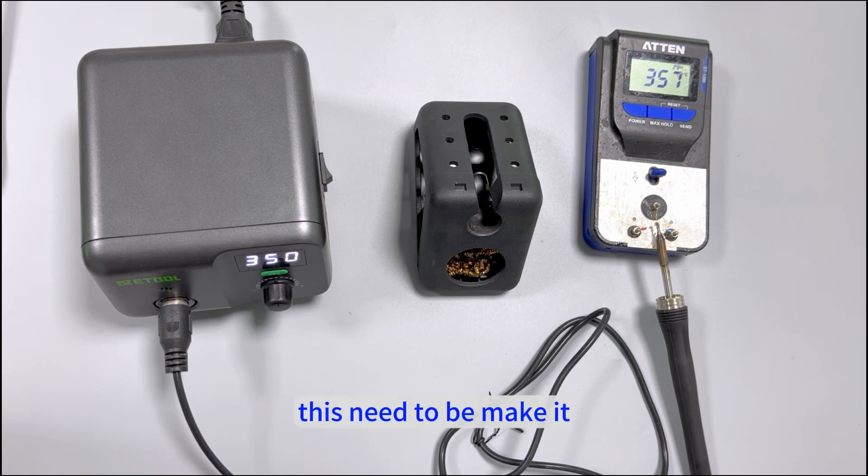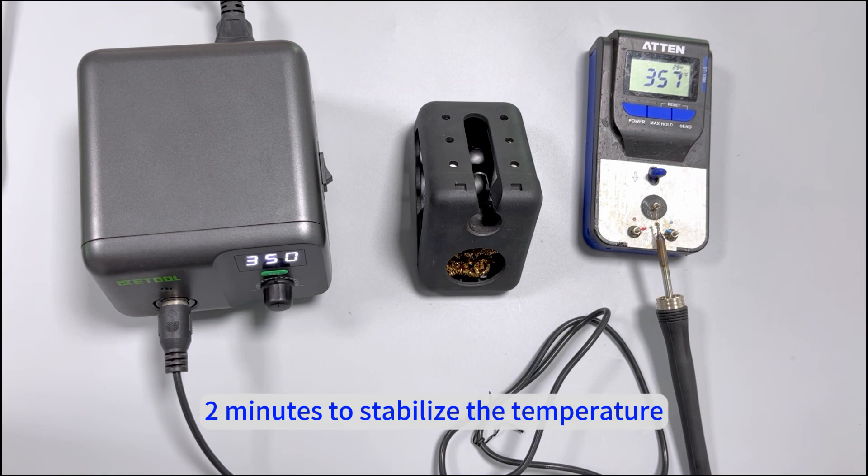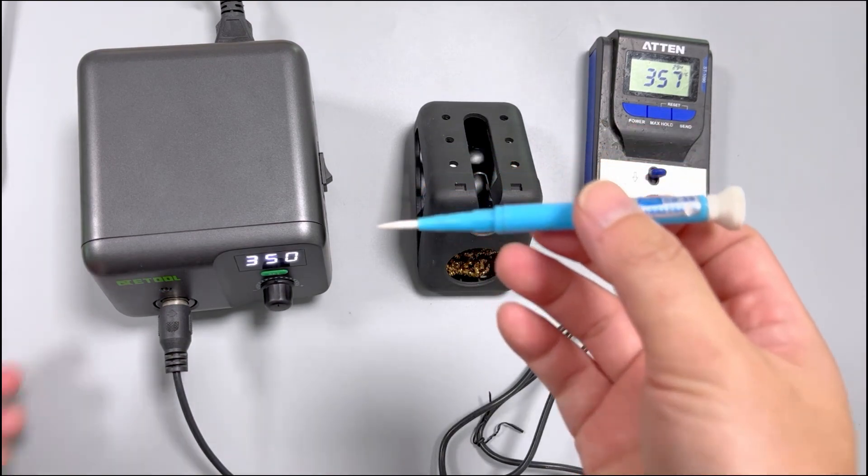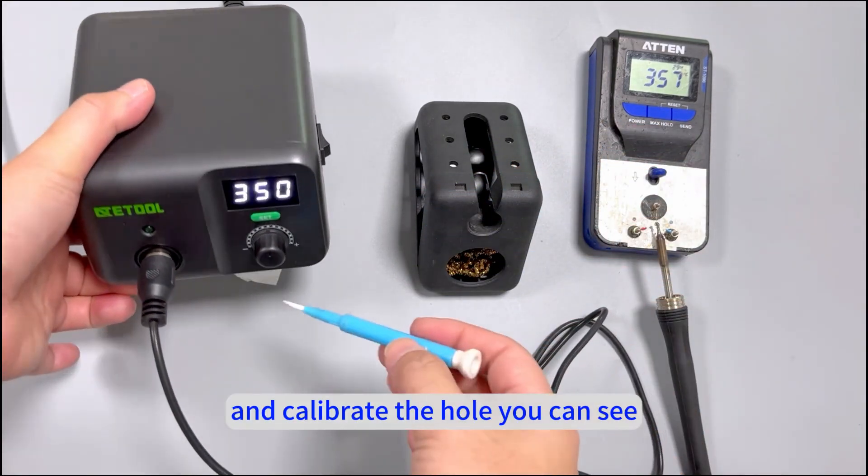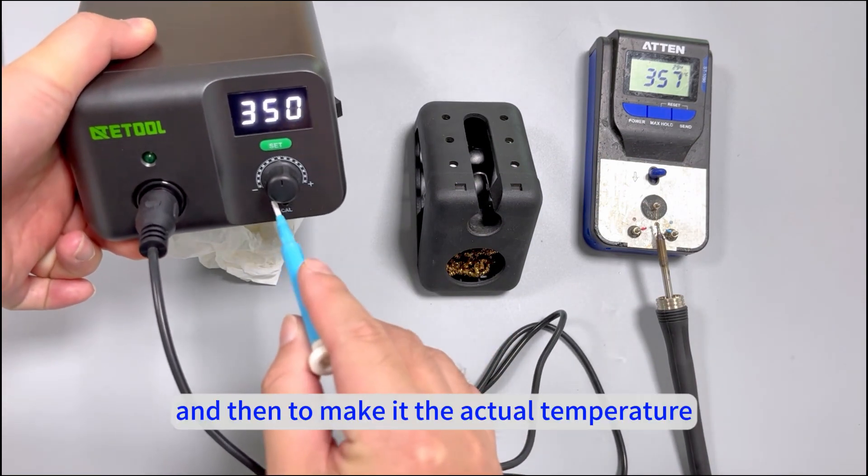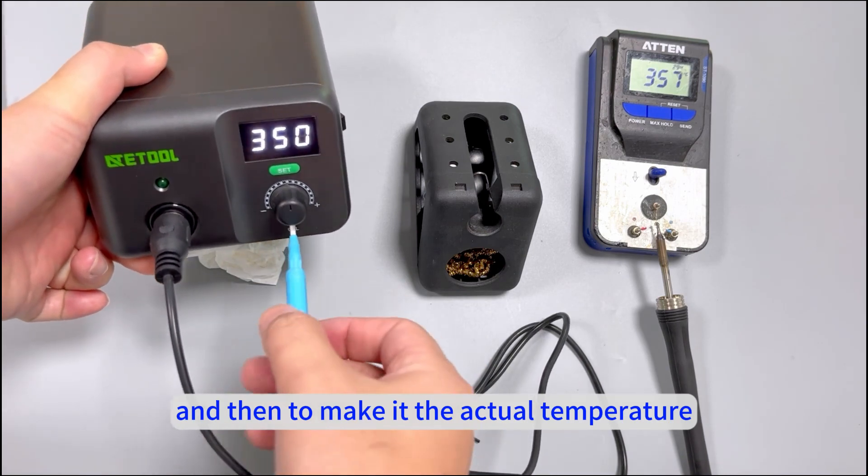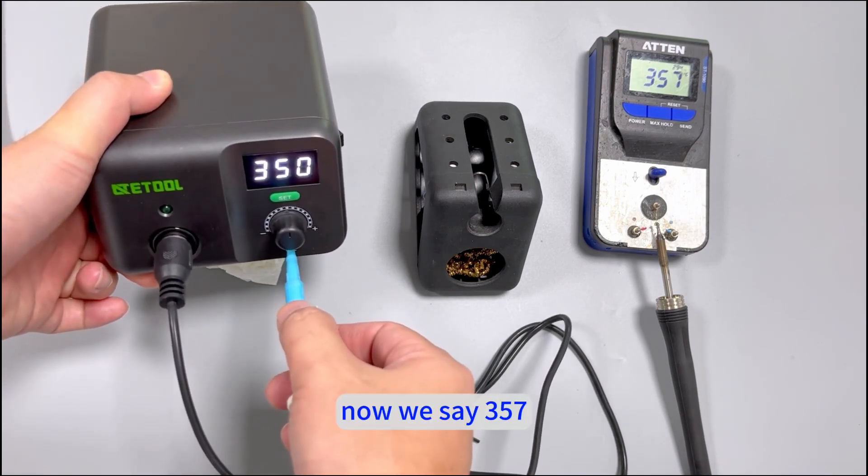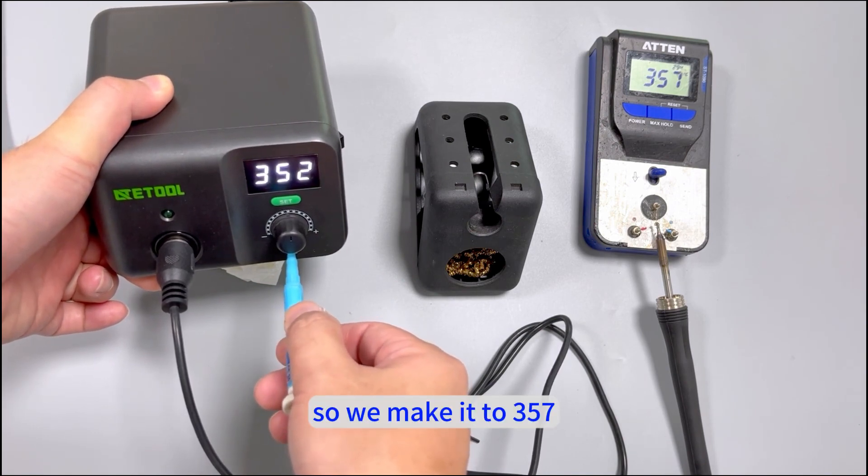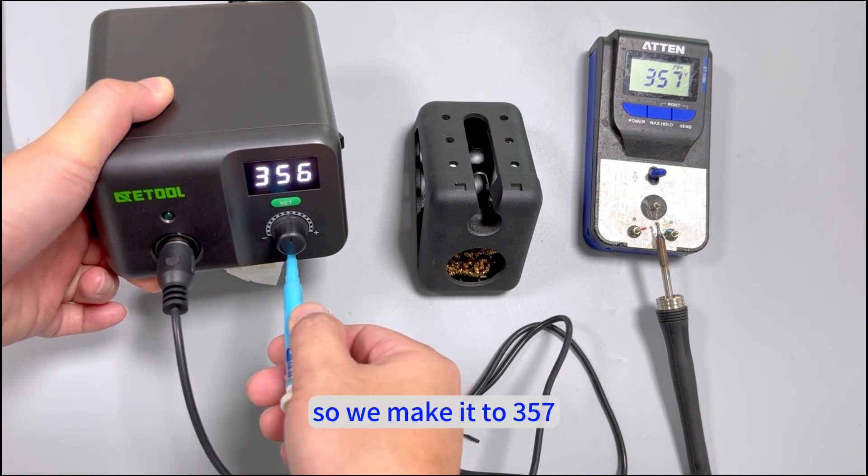We need to wait 2 minutes to stabilize the temperature. Then we use a screwdriver to calibrate the hole and make it the actual temperature. Now we see 357, so we make it 357.